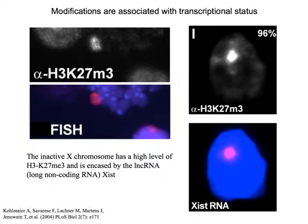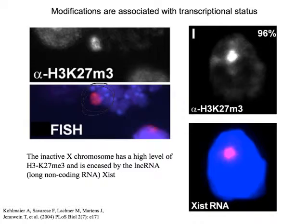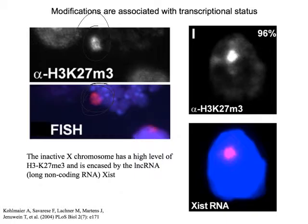Here's a particular example: in human females, the X chromosome — there are two copies of the X chromosome, one is active and one is transcriptionally repressed almost the entire chromosome. The inactive X we can detect here by fluorescence in situ hybridization, or we can stain the cells for one of those modifications of a histone — in this case, trimethylation of histone H3K27 — and you can see that across the entire inactive X chromosome, we have a very high level of this repressive mark.